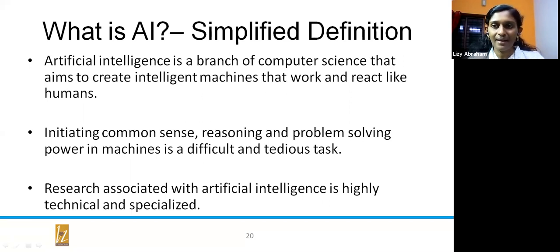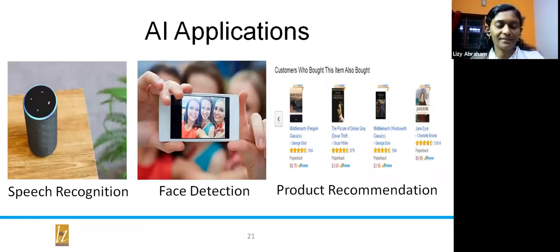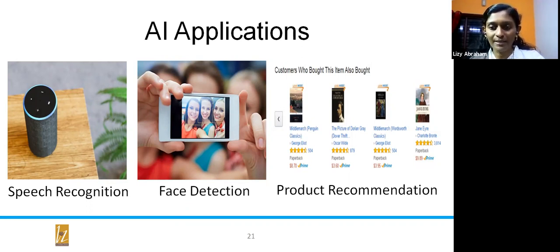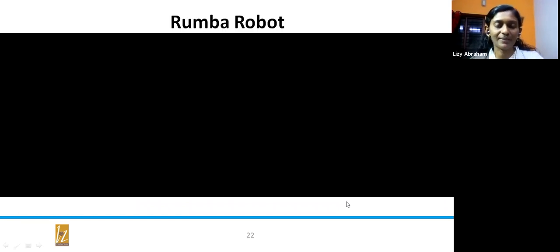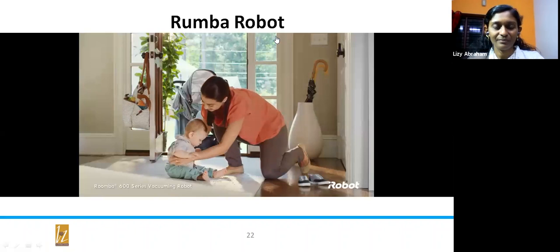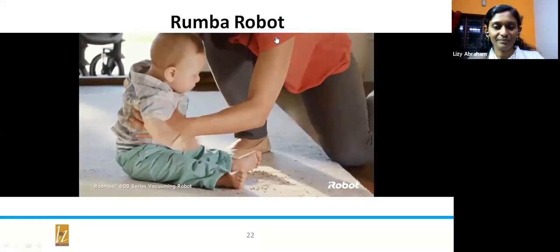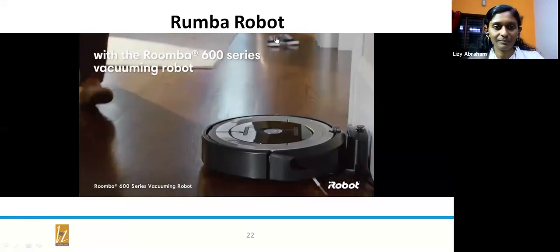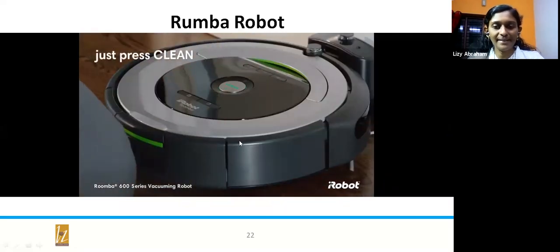What is artificial intelligence? As the name implies, it is a branch of computer science that aims to create intelligent machines that work and react like humans. Applications include speech recognition — you're already familiar with Alexa — face detection, which your mobile already has, product recommendation for online purchases, and the Roomba robot, which intelligently incorporates AI, IoT, and sensors together.